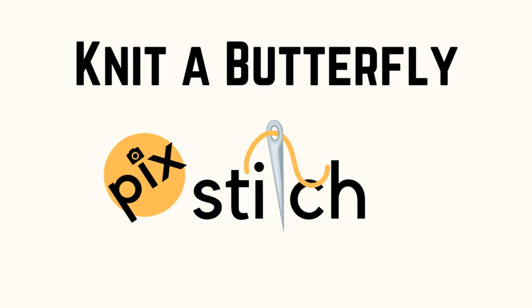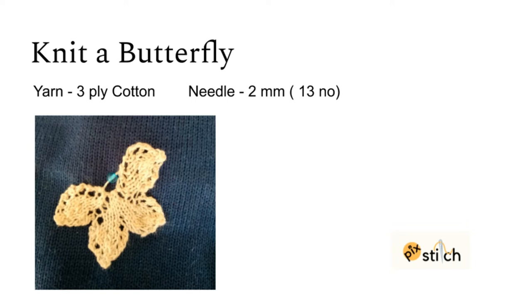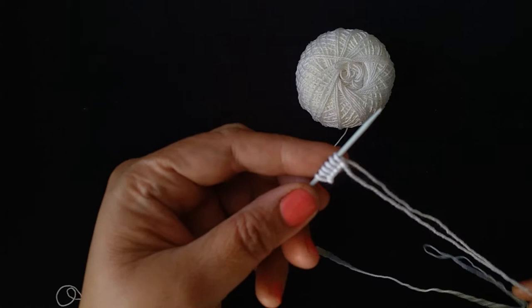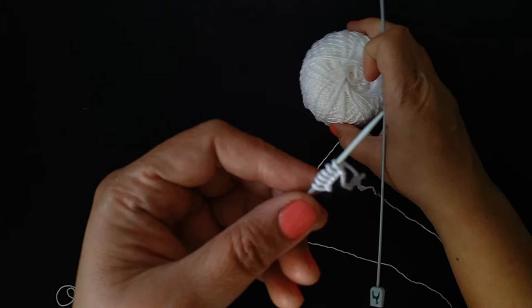Knit a butterfly. Hello fellow knitters, add another dimension to your plain and simple work with this beautiful butterfly. Requirements: 3-ply cotton yarn of any color and needles 2mm or 13 number. We'll start with 6 cast on stitches.